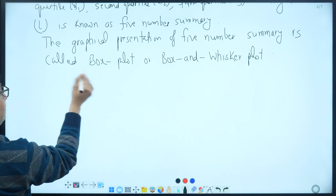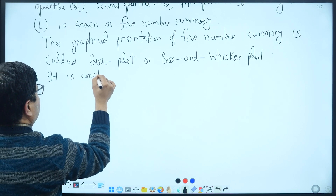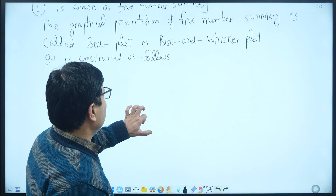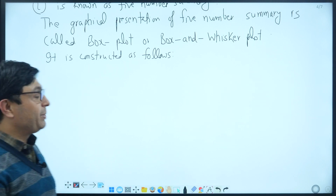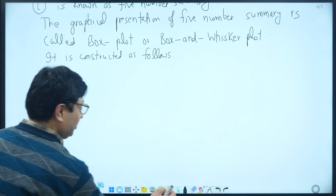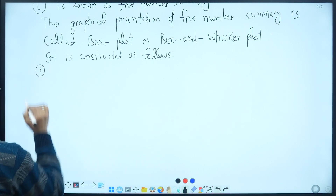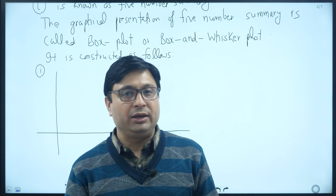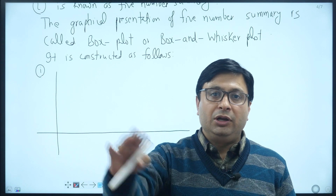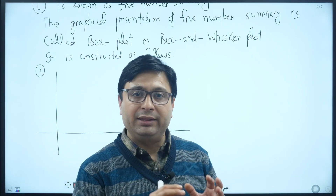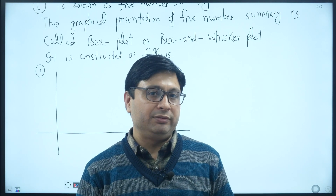It is constructed as follows. When we consider the two base orientations — horizontal or vertical — there can be confusion when comparing them in an exam context, so it is important to use clear terminology. First, we have to plot the y-axis and point out 5 points: smallest, Q1, Q2, Q3, and largest. We have to plot the 5 numbers and then draw a box plot.